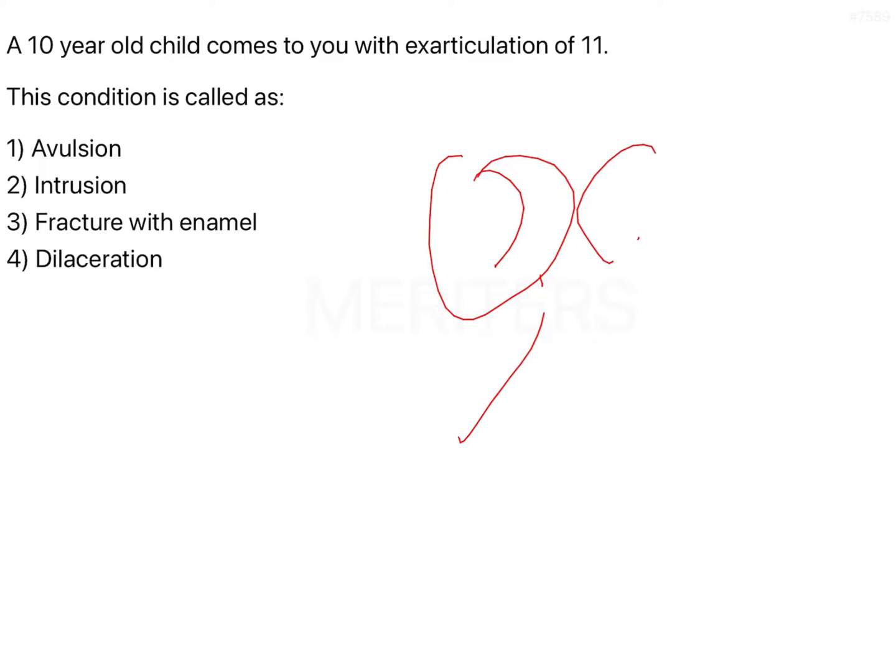The tooth articulates to the alveolar bone with the help of a periodontal ligament. So this tooth basically has come out of its joint, that means it has come out of the alveolar bone, and what is this condition called is what they have asked you.